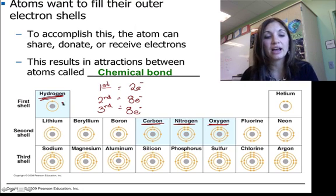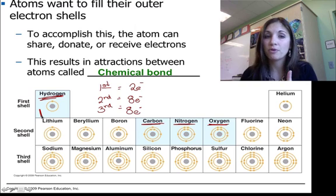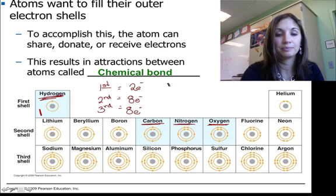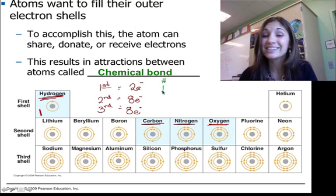Let's talk about hydrogen. Hydrogen has an atomic number of one. That means it has one proton and one electron. So hydrogen is going to put that one electron right here in its first energy level.